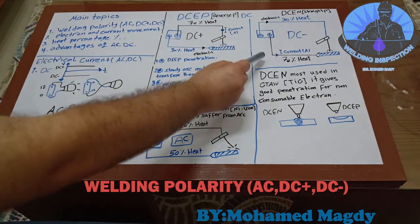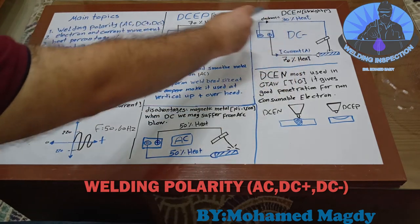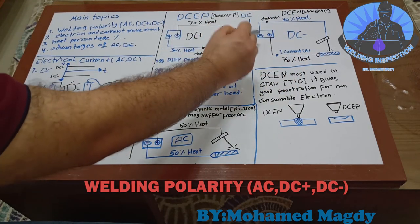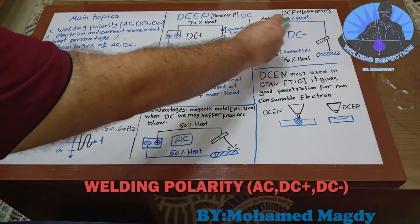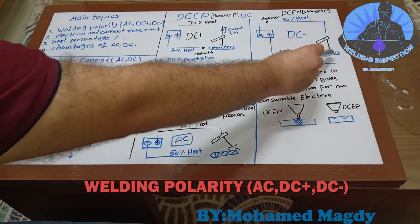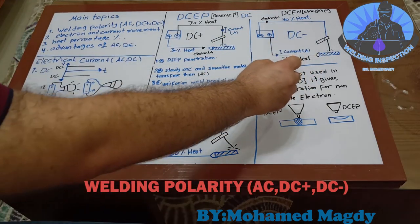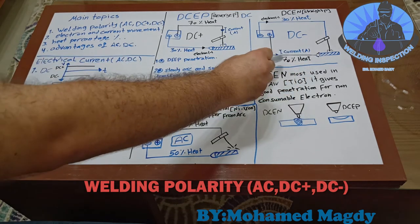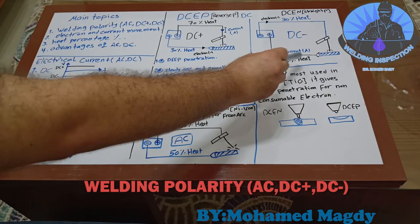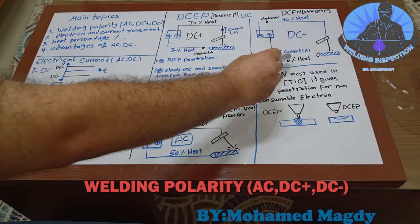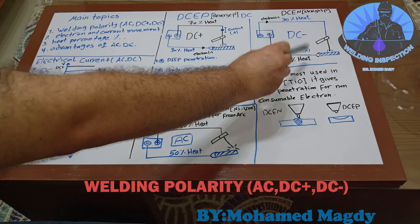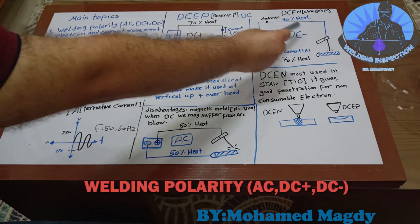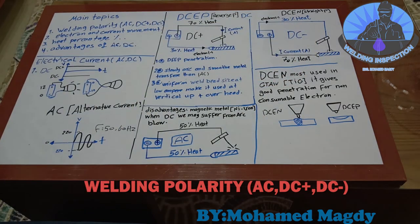In direct current electrode negative, current moves from positive to negative, and the electrons move from the anode (negative) to positive, crossing the barrier and concentrating in the workpiece — giving 70% of heat and electrons at the workpiece and 30% of heat and electrons at the electrode.